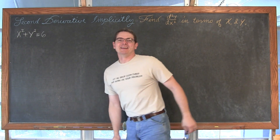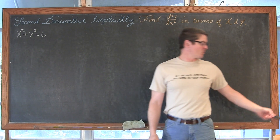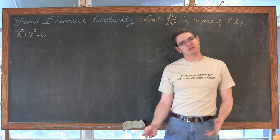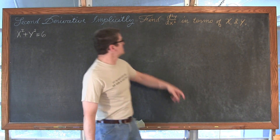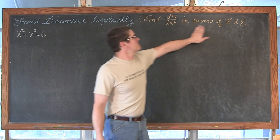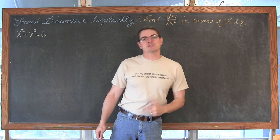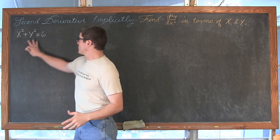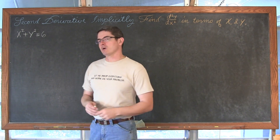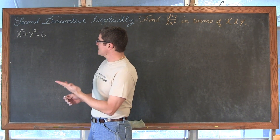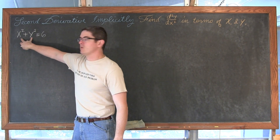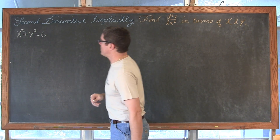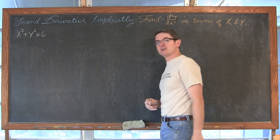BAM! Mr. Tarrou! In this video we are going to work through two examples of finding the second derivative implicitly — in other words, finding the second derivative in terms of x and y. We are doing it implicitly because with some of these problems it is a lot less work. Let's start off with our circle with the center on the origin and a radius of square root of six: x squared plus y squared equals six.